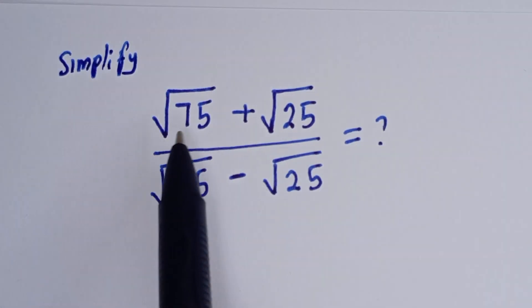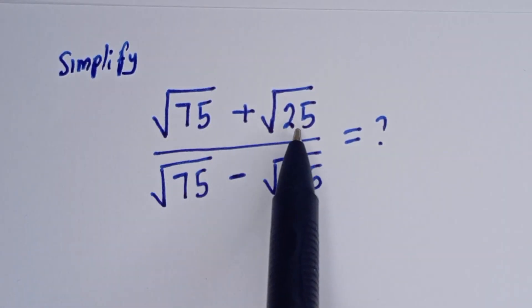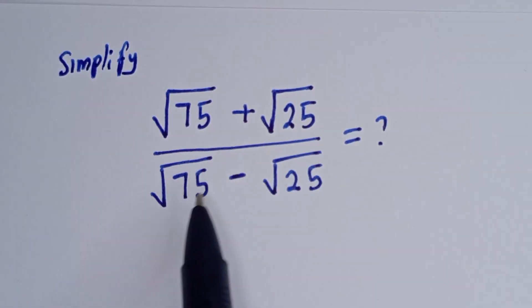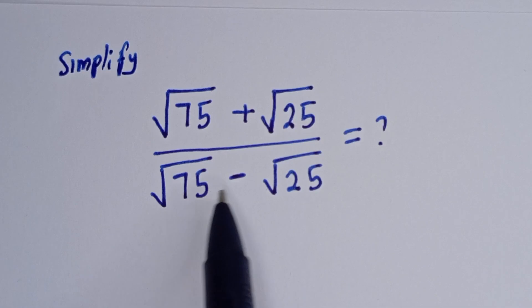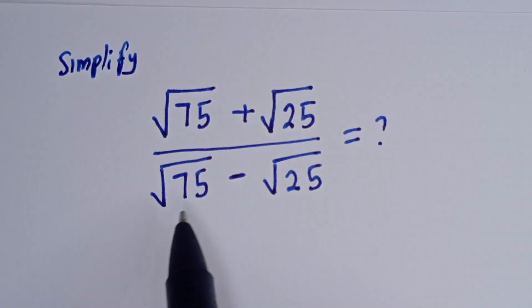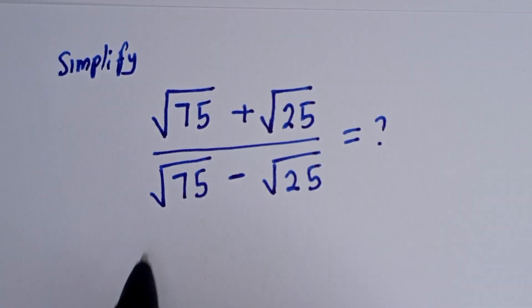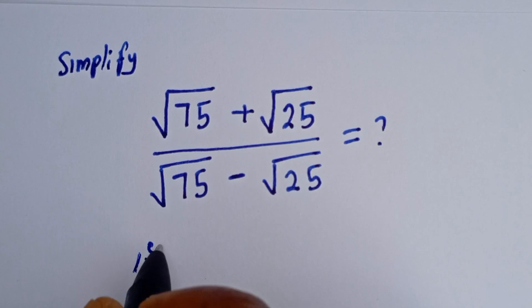Hello. How to simplify square root of 75 plus square root of 25, divided by square root of 75 minus square root of 25. Here we are going to make use of two methods. Let's consider the first method.